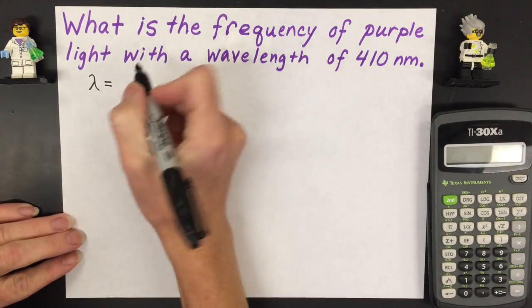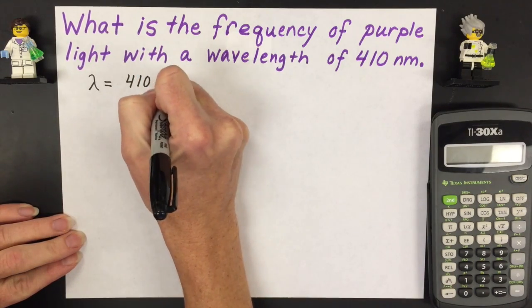So the first thing is that we know what lambda is. Lambda is wavelength and it's 410 nanometers.